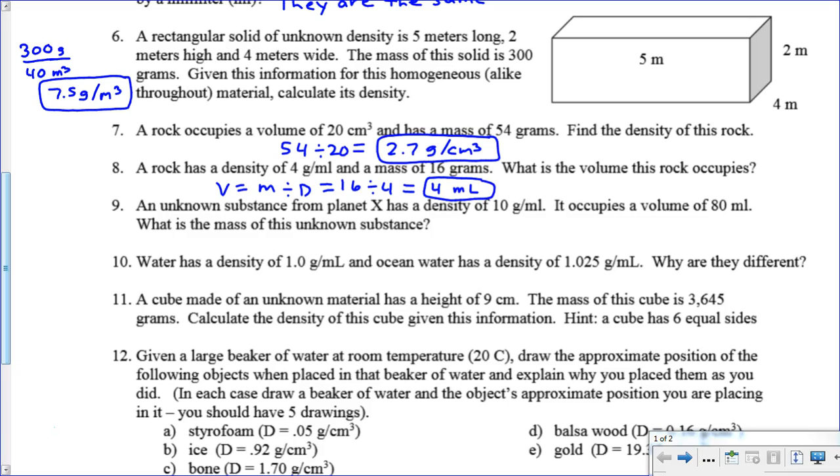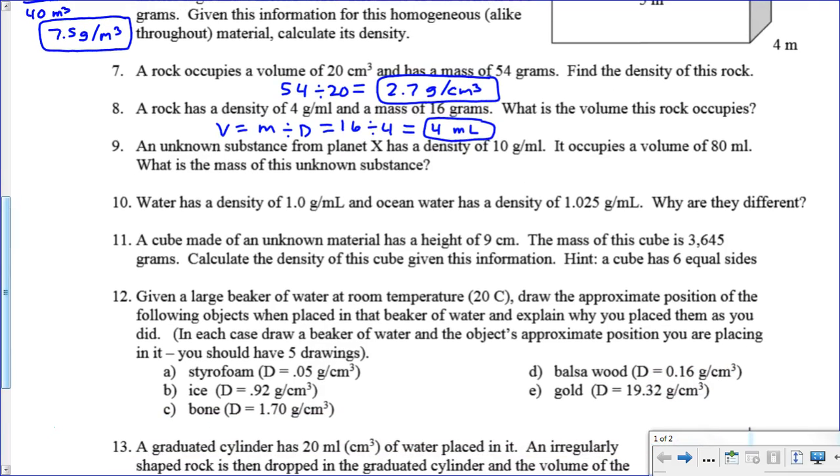For the next one, it says an unknown substance from planet X has a density of 10 grams. It occupies a volume of 80 milliliters. What's the mass? If you go back to your algebra circle, mass equals density times volume. So we just multiply these together. The density is 10, the volume is 80. Multiplying those together, we get 800. Since we're finding mass here and the units on mass that we're given were grams, it's going to be 800 grams.